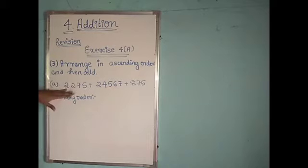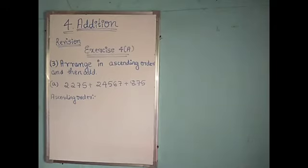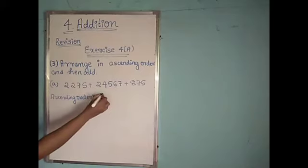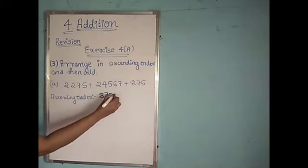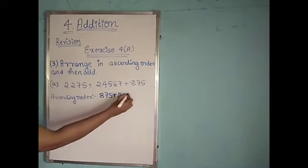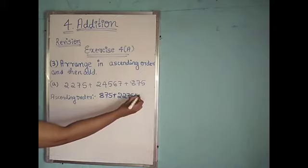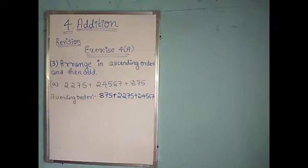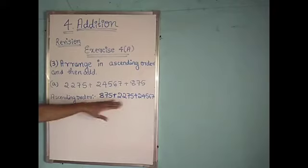Here we have to arrange these numbers in ascending order. Ascending order means from the smallest number to the largest number. So here we have 875 plus 2275 plus 24567. Next, we have to add these numbers.